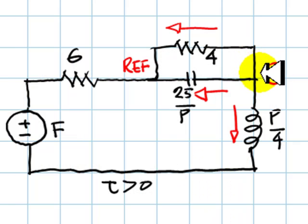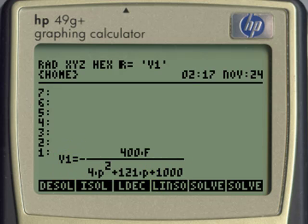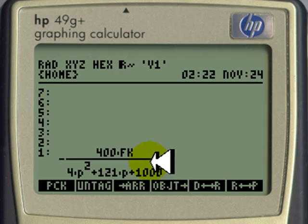But if we divide V1 by 4 ohms, we get the current that we are trying to compute. This current. Let me eliminate the tag with this own tag. That voltage divided by 4 ohms is going to be negative 100 fx divided by the same denominator. But let's do that anyway.